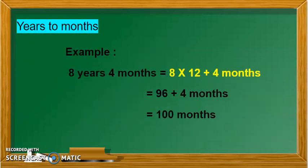Let us understand it with an example. 8 years, 4 months. Now, we have to convert it into months. So, 4 is in months. So, we will just add 4 and we have to convert 8 years. So, 8 multiplied by 12 and plus 4 months. 8 twelves are 96 plus 4, that is 100 months. So, 8 years, 4 months is equals to 100 months.